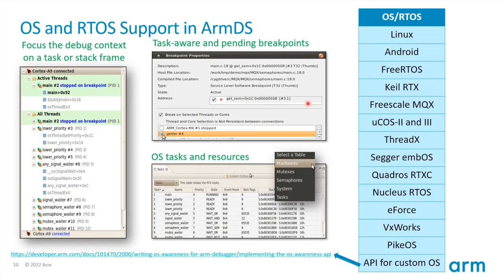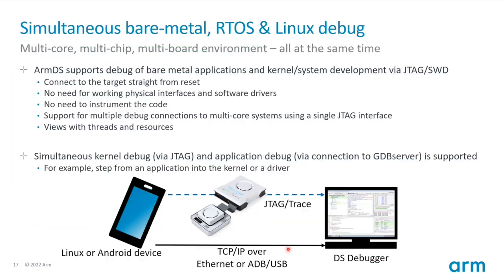If you're running an OS, DS is aware of several different OSes including Linux, FreeRTOS, and ThreadX. We've open-sourced our API for building custom OS awareness so you can enable DS to be aware of your own custom OS. You can simultaneously debug multiple cores, multiple chips, and multiple boards all at the same time.